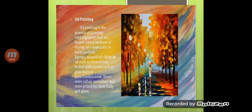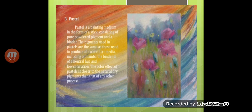The second medium is pastel, which is a medium in the form of a stick consisting of pure powdered pigment and a binder. The pigments used in pastels are the same as those used to produce all colored art material media, including oil paints. The binder is of a neutral hue and low saturation. Pastels are available in stick form and contain pure powdered pigment and binder. The color effect of pastel is closer to the natural dry pigments than that of any other process.